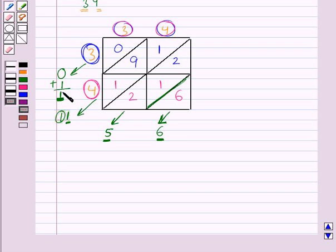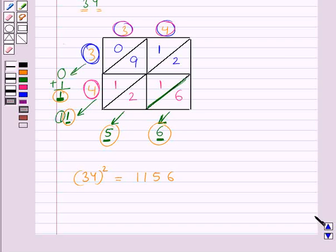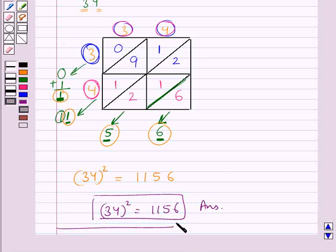Now these underlined digits would give us the square of the given number. So we get 34 square is equal to 1156. So this is how we can find the square of a given number using the diagonal method. So final answer is 34 square equal to 1156. So this completes the session. Hope you have understood the solution for this question.